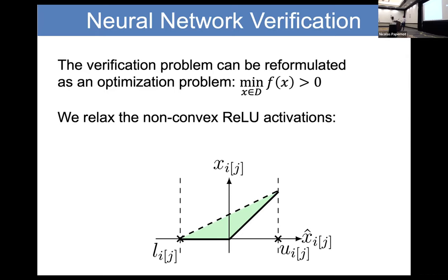The output we might get may be more negative than the actual minimum. A common approach is branch and bound — we branch over the possibilities of the ReLU. We pick an ambiguous ReLU and consider two cases: either it's negative or it's positive. We branch and in theory do that for every single ReLU, though in practice that's not possible given the size of neural networks.